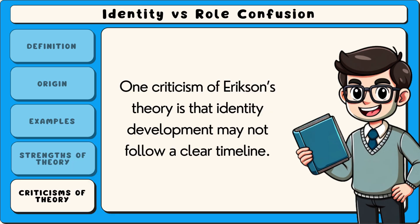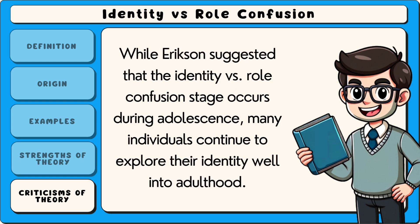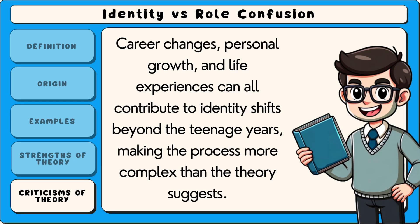One criticism of Erikson's theory is that identity development may not follow a clear timeline. While Erikson suggested that the identity versus role confusion stage occurs during adolescence, many individuals continue to explore their identity well into adulthood. Career changes, personal growth, and life experiences can all contribute to identity shifts beyond the teenage years, making the process more complex than the theory suggests.